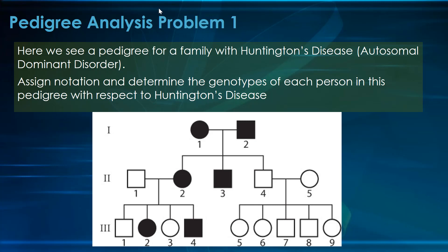Let's do a pedigree analysis problem. Here we see a pedigree for a family with Huntington's disease, and that's of course an autosomal dominant disorder. We're going to assign notation — basically alleles — and we're going to determine the genotype of each person in this pedigree with respect to Huntington's disease.